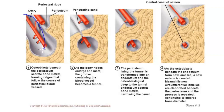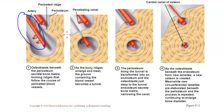The osteoblasts secrete bone matrix around the arteries laying on the surface of the bone, forming ridges called periosteal ridges that follow the course of the periosteal blood vessels. As these ridges grow outward, they enlarge and meet, and you see a tunnel forming around the artery. So while the artery used to be on the surface of the bone, it is now being surrounded by bone and is on the inside.